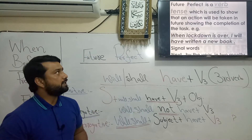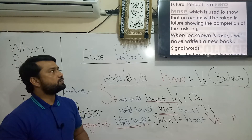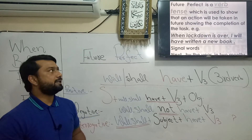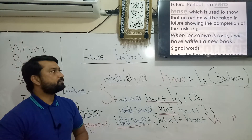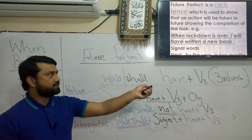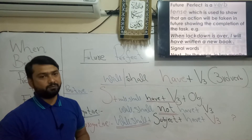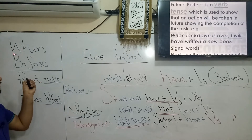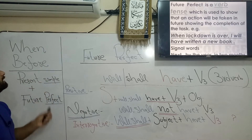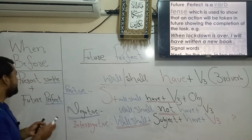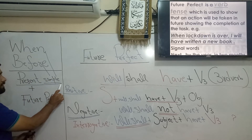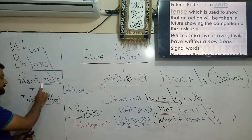Future perfect is a verb tense used to show that an action will be taken in the future showing its completion. Look at the example: 'When the lockdown is over, I will have written a new book.' Signal words include: next, by, the year, in two months. Remember: most non-native speakers make a mistake when using 'when' and 'before' in future perfect tense. Whenever you use 'when' or 'before,' you must translate that clause in present simple tense.